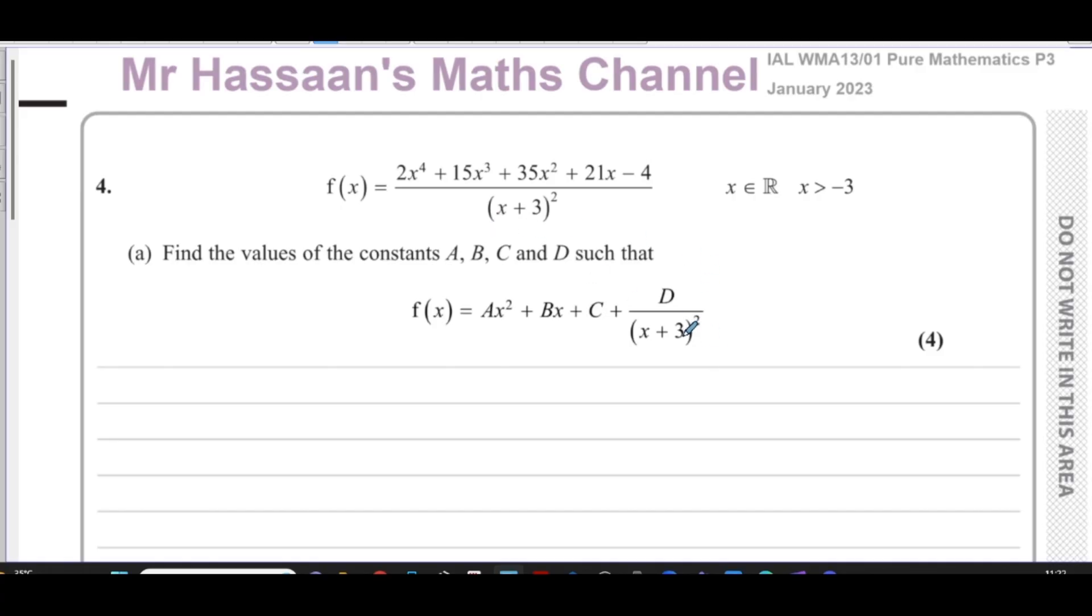Probably the easiest way would be to use algebraic long division, so that's what I'm going to show you first. I'm also going to show you how to do it using identities. So let's start with algebraic long division. First of all, (x plus 3) all squared I can write that as x squared plus 6x plus 9. Don't make the mistake of saying x plus 9 or x squared plus 9, it's x squared plus 6x plus 9.